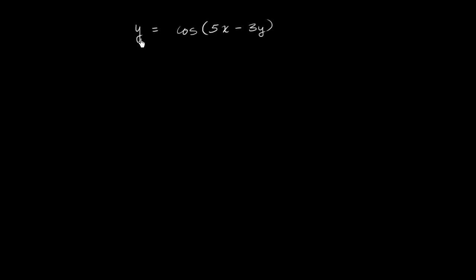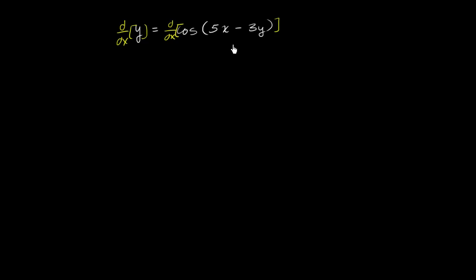Let's say we have the relationship y is equal to cosine of 5x minus 3y. What I want to find is the rate at which y is changing with respect to x, and we'll assume that y is a function of x. So let's apply the derivative operator to both sides of this equation.